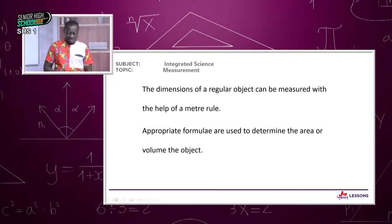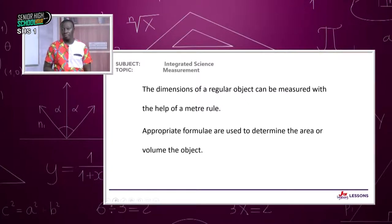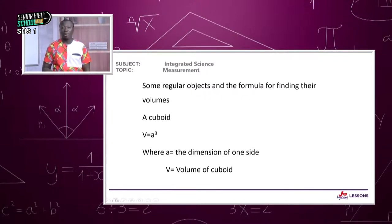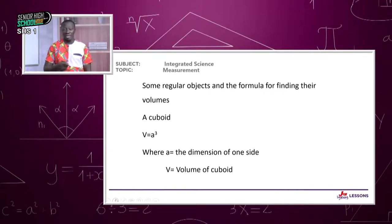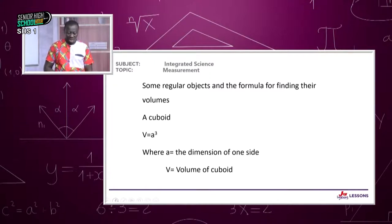When you have the shape of the object, use the appropriate formula to determine its volume. For a cuboid — a solid regular object with the same three dimensions — the volume is a times a times a, which is a cubed, where a is the dimension of one side.